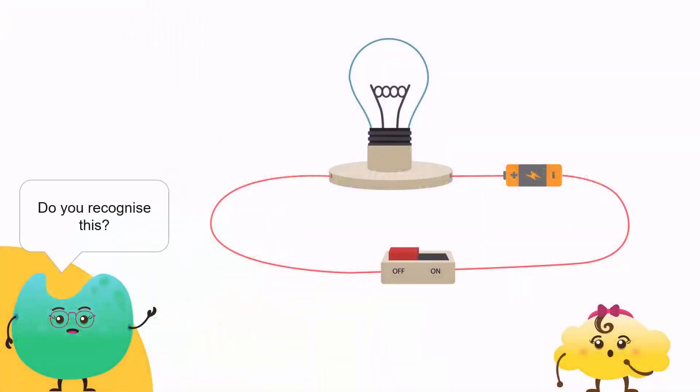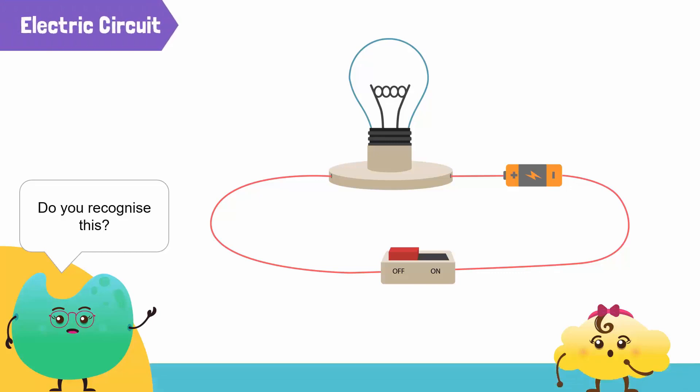Do you recognize this? It is an electric circuit. An electric circuit is the path along which an electric current flows.